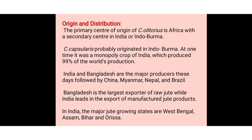The primary center of origin for Corchorus olitorius is Africa, with secondary distribution in India and Indo-Burma. Corchorus capsularis originated in the Indo-Burma region, and at one time India had a monopoly, producing 99% of world jute production.